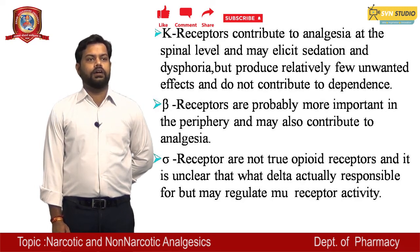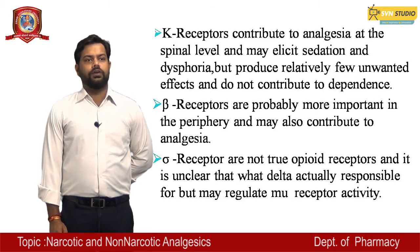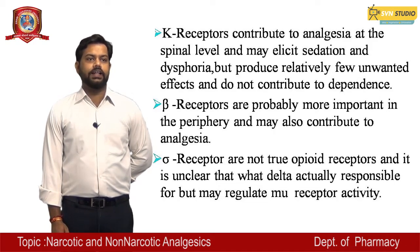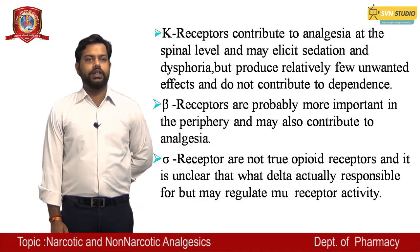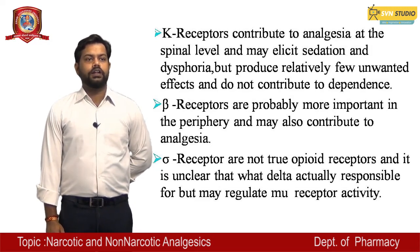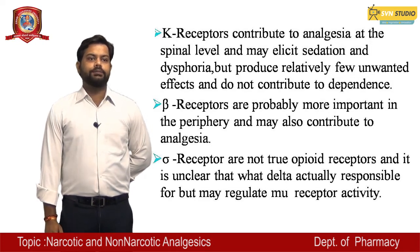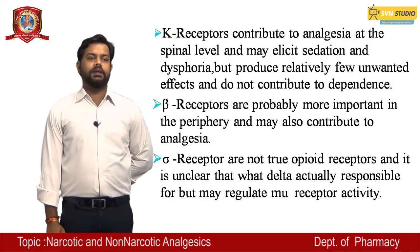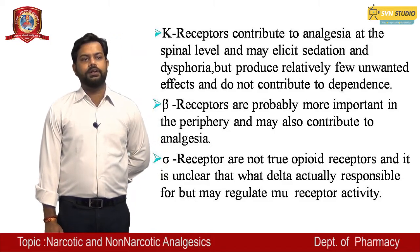Sigma receptors are not true opioid receptors and it is unclear what they are actually responsible for, but they may be regulated through MU receptor activity, whether MU receptor 1 or MU receptor 2.